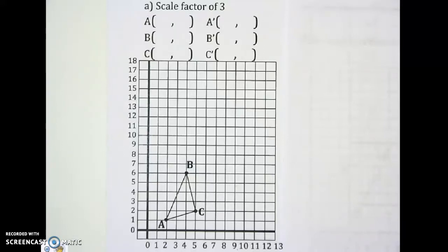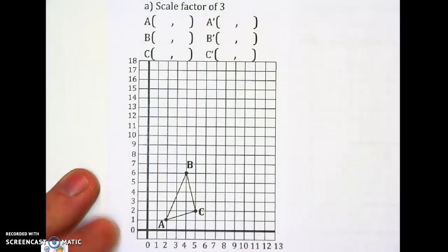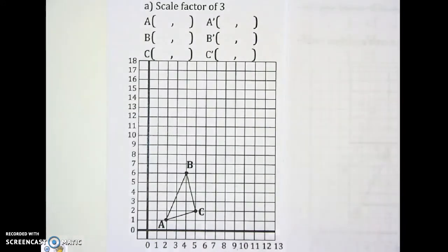Today we're going to be dilating by a scale factor of 3. That's all you've got to do. First thing when you've got a dilation, I'm going to write the coordinate points up here because if you have the coordinate points, it makes it way easier to figure out what the dilation looks like.